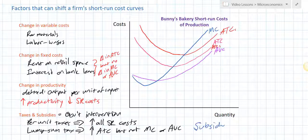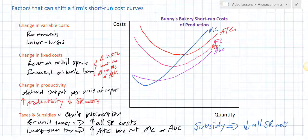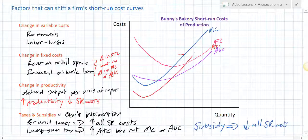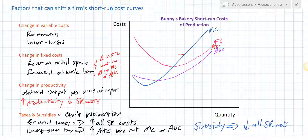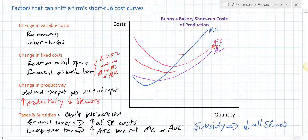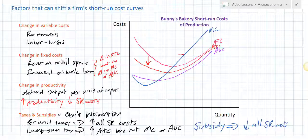Subsidies — what effect will a subsidy have? A subsidy is a payment from the government to producers, so a subsidy will decrease all the short-run costs. A per unit subsidy for every unit of output will lower the marginal cost to MC1, will lower the average variable cost to AVC1, and will lower the average total cost. A lump sum subsidy is the reverse of a lump sum tax — it will only affect the average total cost. A lump sum subsidy is a one-time payment from the government to producers, which lowers their average total cost but has no effect on the cost of additional units of output. It's not affecting raw material prices or labor prices — it's only a one-time payment to lower the fixed costs of the firm.